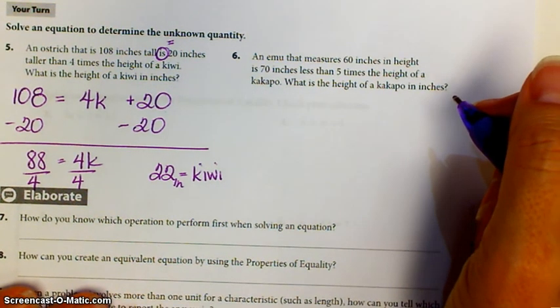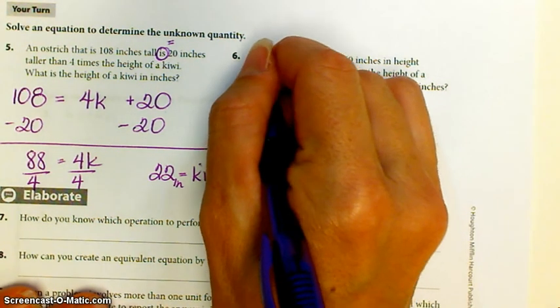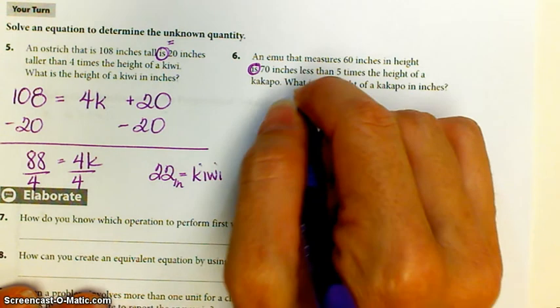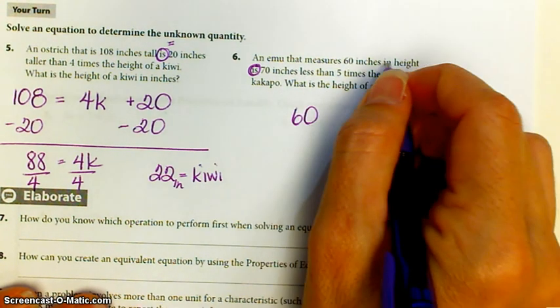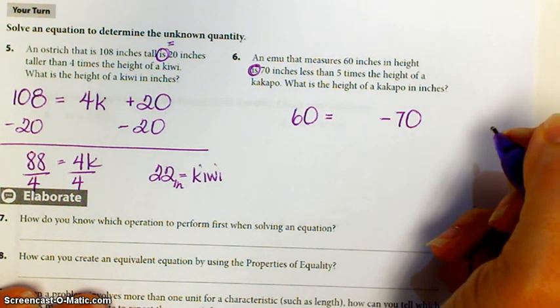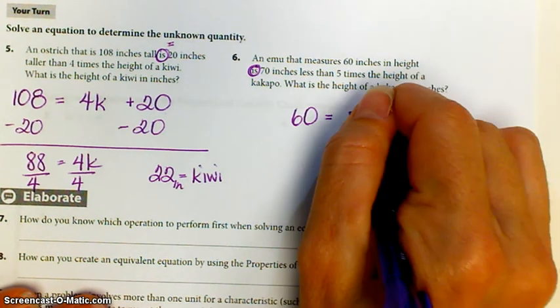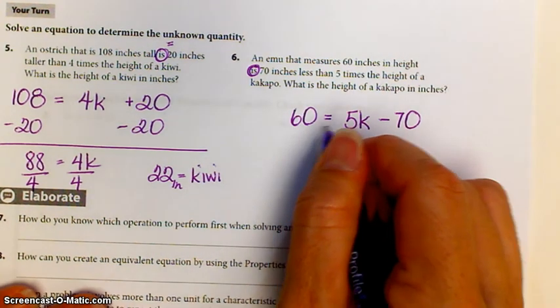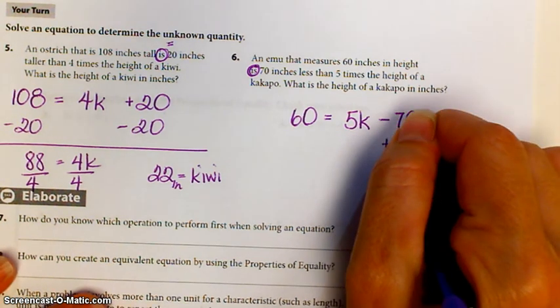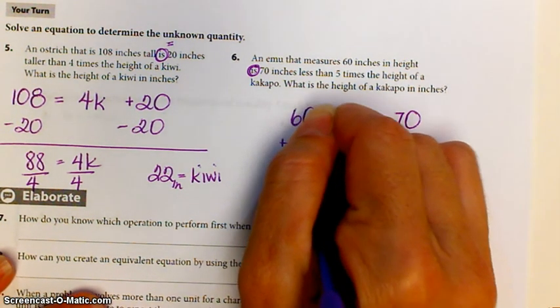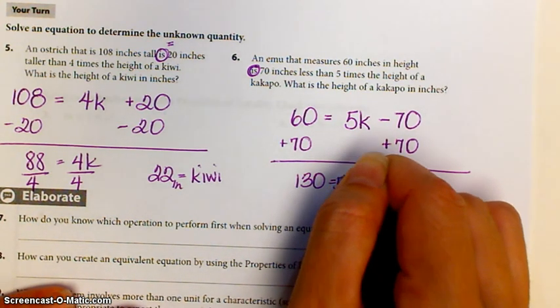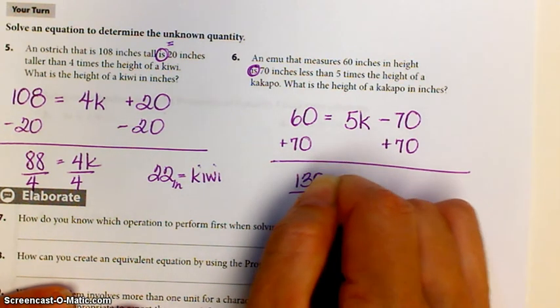An emu that measures 60 inches in height is 70 inches less than five times the height of a kakapo. An emu is 60 inches. 60 inches is 70 inches less than five times a kakapo. An emu is 70 inches less than five times a kakapo. So plus 70 to both sides, that's going to be 130 equals 5K, divided by 5, divided by 5.